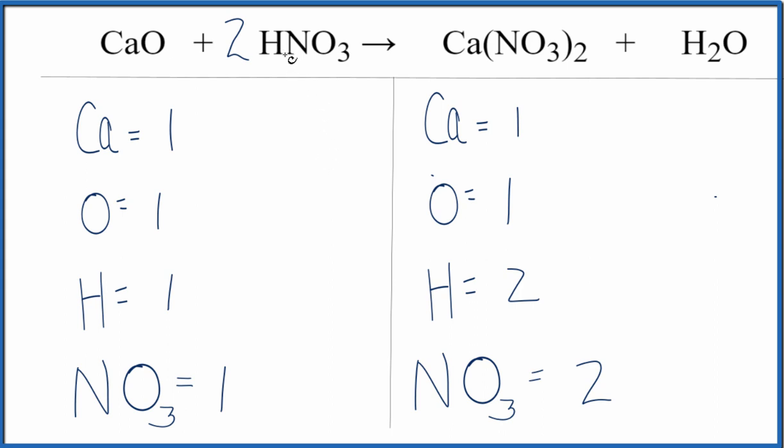Now we have the hydrogen, one times two. Hydrogens are balanced, and then we're treating the nitrate as one item. So the one nitrate times two, that gives us two nitrates. Those are balanced.